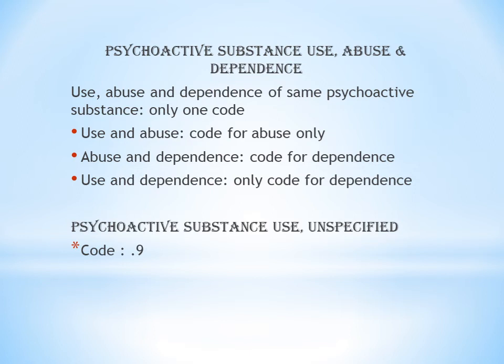When abuse and dependence are both documented, code for dependence only, as it is the more severe condition. Similarly, when use and dependence are both documented, code for dependence — it represents the most severe level for that same psychoactive substance.